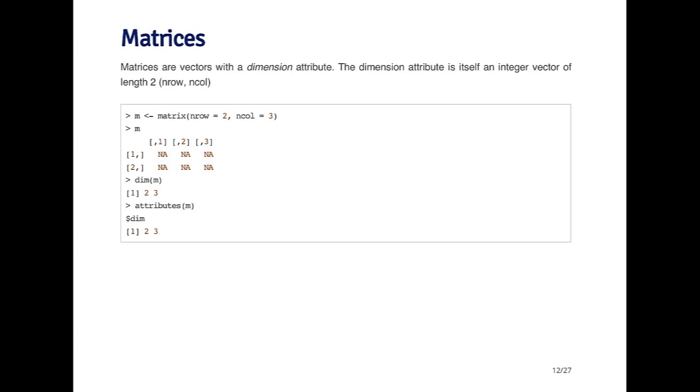If I call the dim function on M, it'll give me the dimension attribute, which in this case says there are two rows and three columns. The first number is the number of rows, and the second number is the number of columns.